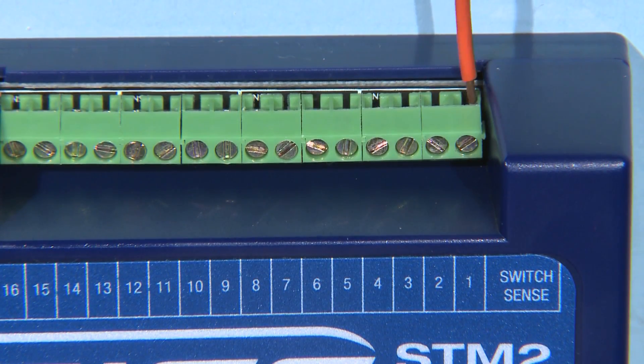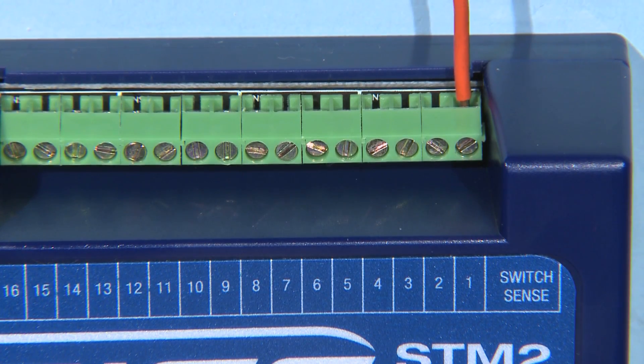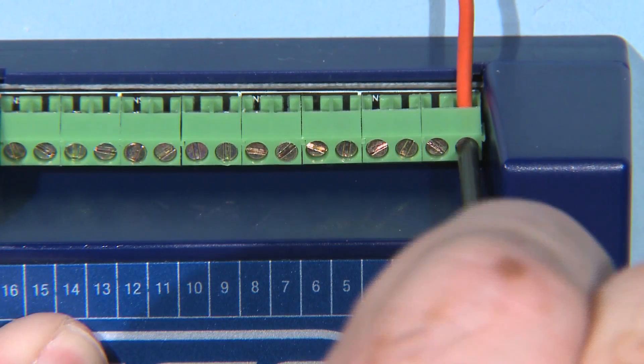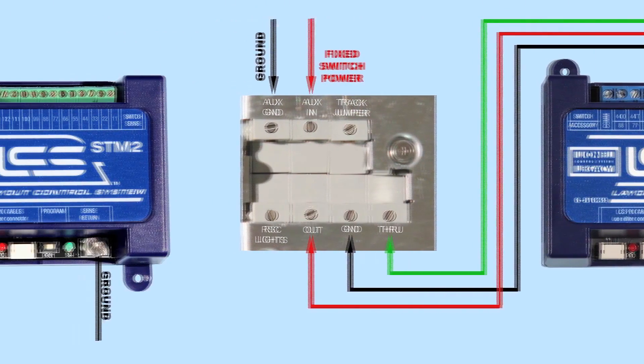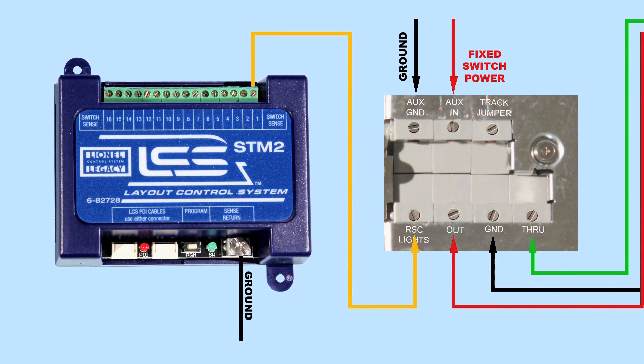For a fast-track switch, the terminal marked 1 is connected to the RSC lights terminal on the first switch programmed with TMCC on your layout.